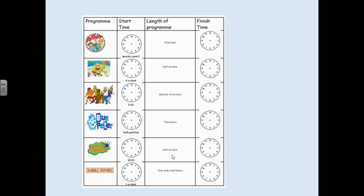Now complete the rest of the activity on your worksheet, or in your workbook if you don't have the worksheet. You've got children's programs with start times shown under the clock. Draw the hands for the start times, then use the given length of each program to work out the finishing time and draw those clock hands too. Once you've finished, please send a photo of your work to year2@grange.harrow.sch.uk. See you tomorrow, bye!